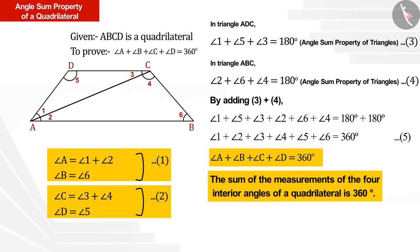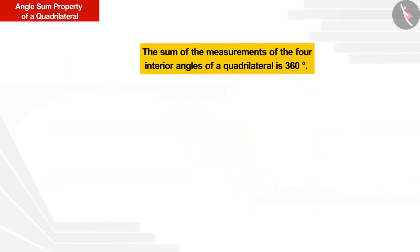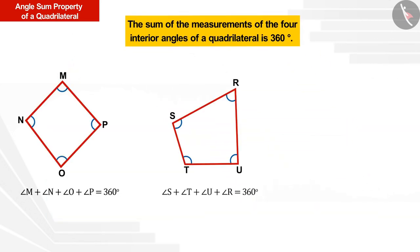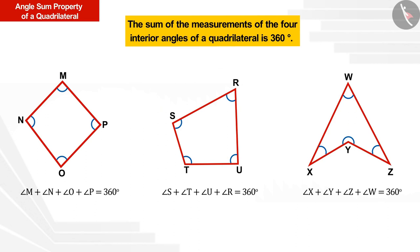We also call it the angle sum property of a quadrilateral. This property is true for both convex and concave quadrilaterals. Therefore, we can say that the sum of the four interior angles of any quadrilateral will always be 360 degrees.